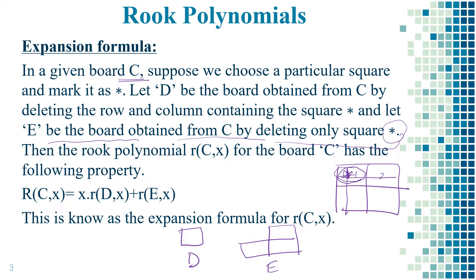Now we find the rook polynomial for board D and board E separately, then combine them using the formula: R(Cx) = x · R(Dx) + R(Ex). R(Dx) is the rook polynomial calculated for board D, and R(Ex) is calculated for board E; they are combined together to get R(Cx). This is the rule to divide the given board into different components.